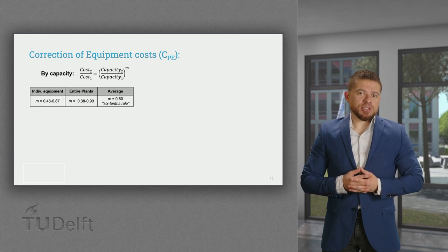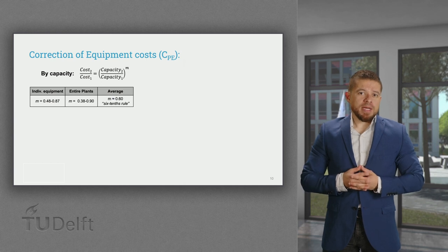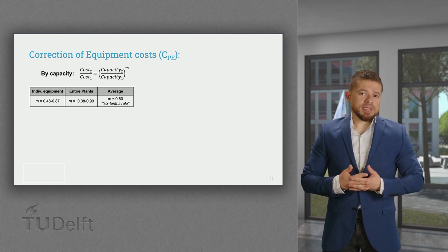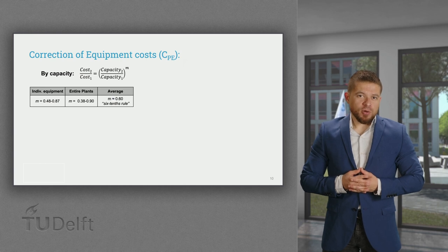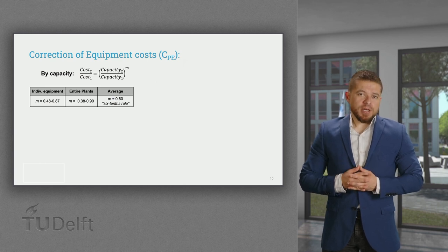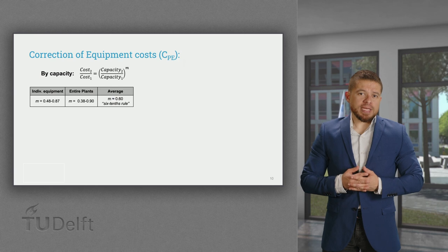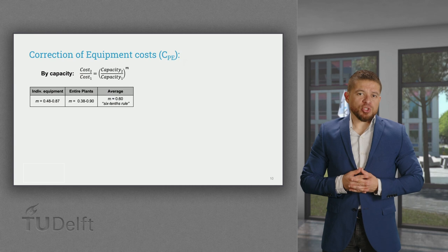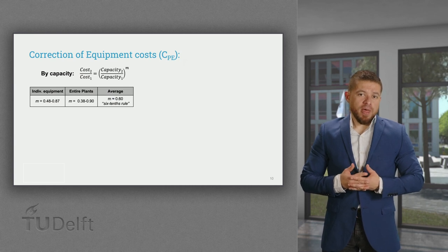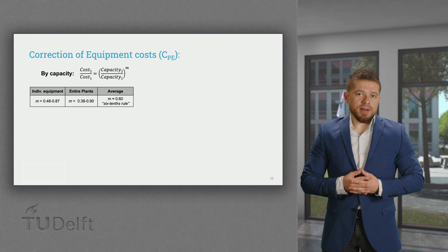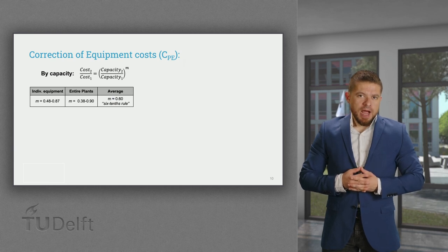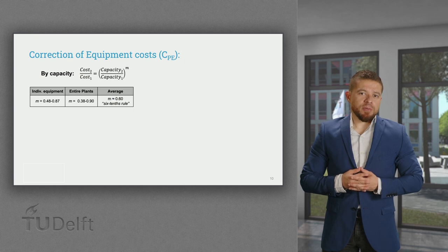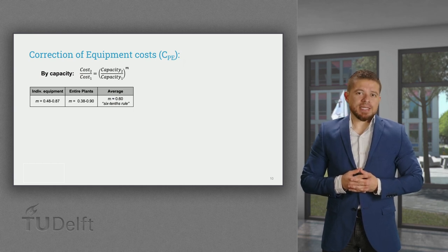In that case, we can apply the cost-capacity relationship, which describes the behaviour of the economy of scale, which means that a process unit can be scaled up at an additional fraction of the original cost. This relationship gives good estimates for both individual equipment and entire plants, as long as the different process units can be scaled up rather than duplicated for a parallel operation. The average value of the exponent m has been reported as 0.6, and this is why this is known as the six tenths rule.